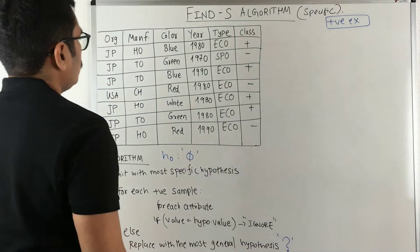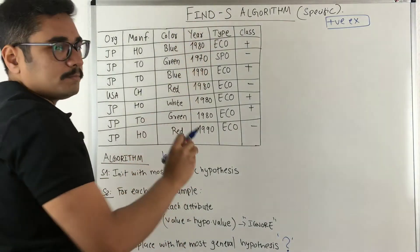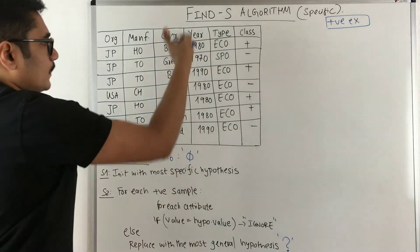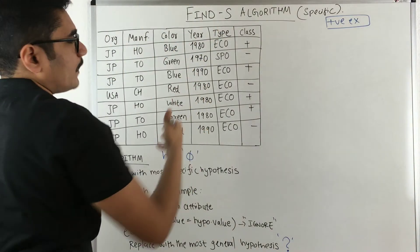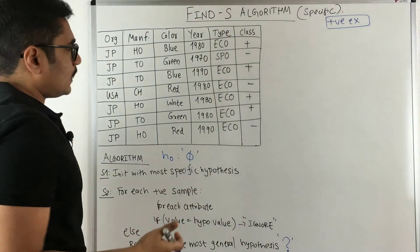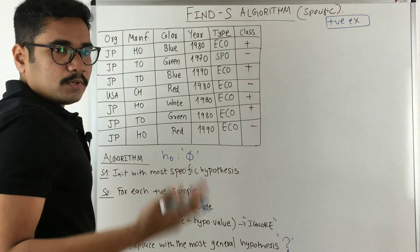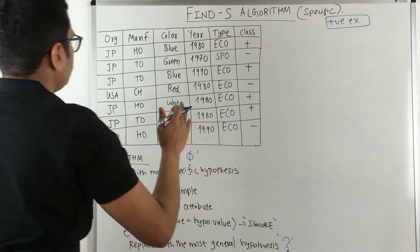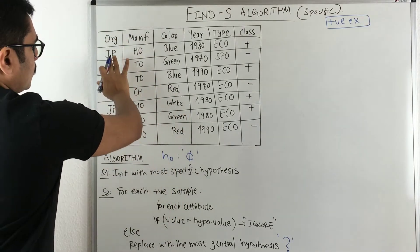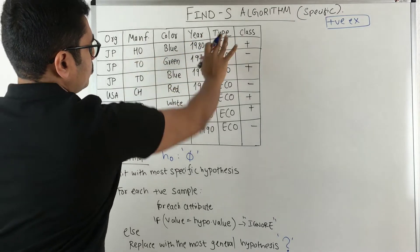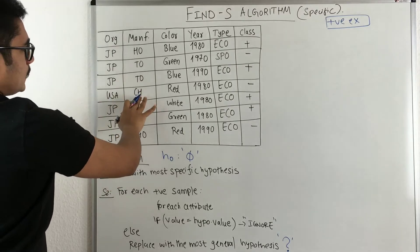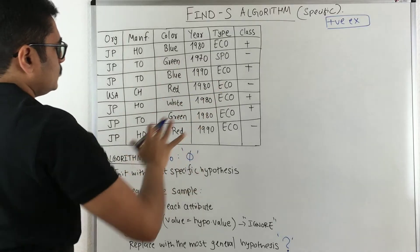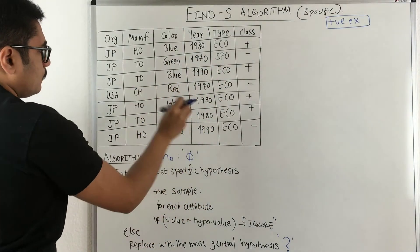Now we have a dataset with seven different instances, and we'll perform the Find-S algorithm on it. We have five different attributes and the last column is the class, which is the target. There are four positive examples and three negative examples. The attributes are: origin, manufacturer, color, year, and type. For example, 'JP' stands for Japan, 'Ho' for Honda, 'B' for blue, 1980 for year, and 'Eco' for economic. Similarly, we have USA, Chrysler, red, and 'Spo' for sports, 'To' for Toyota.